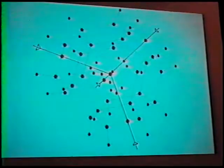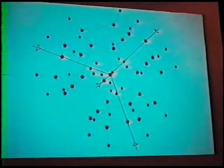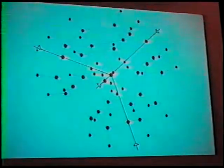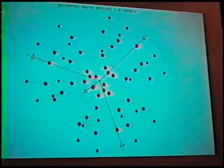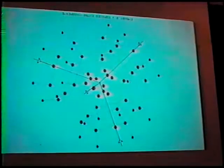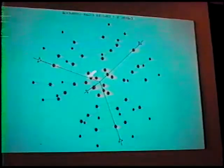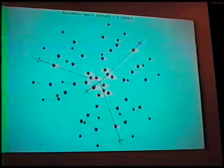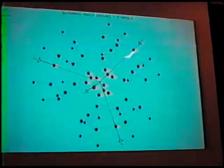Considering the population parameter, we can say that two sodalite cages are filled by extra-framework species out of the eight cages present in the unit cell. This view is related to the 1.8 normal acid treatment. Once again, we found the three atoms which are not perfectly situated on the threefold axis, and you can find the other atoms situated near the hexagonal prism.